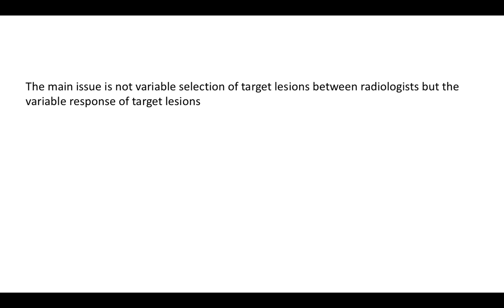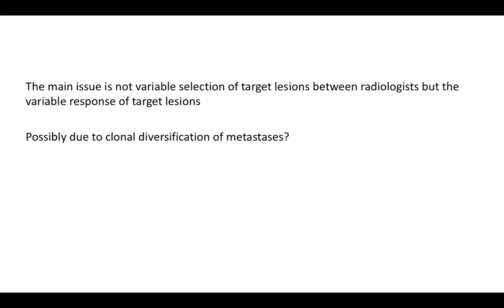The main issue is of course variable selection of target lesions, but also more importantly the variable response of those target lesions. Why does this happen? Because tumors behave differently and each metastasis behaves differently. Most likely this is due to clonal diversification of metastases, and a few selected target lesions may not represent the overall whole body tumor burden and its response.